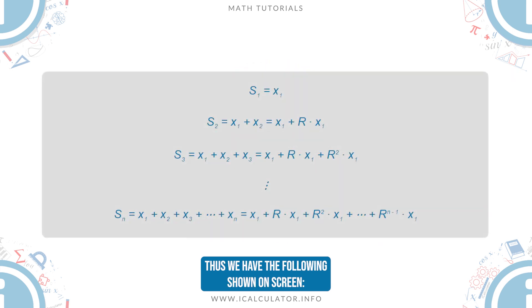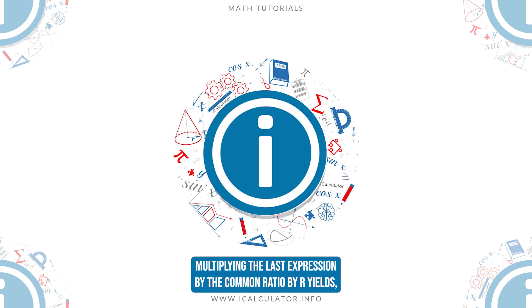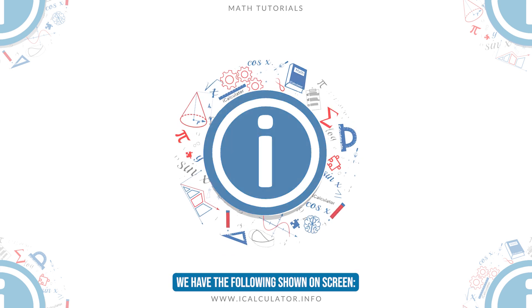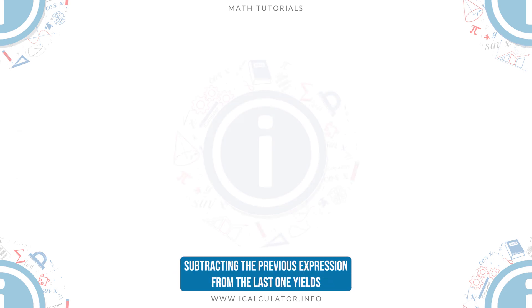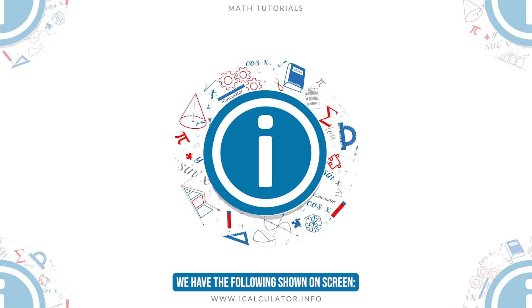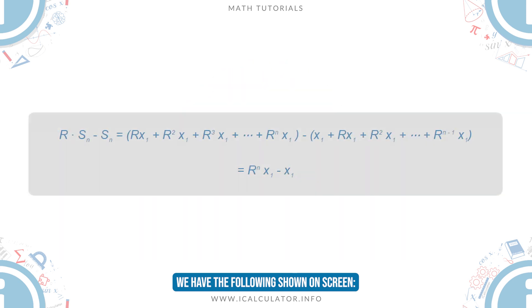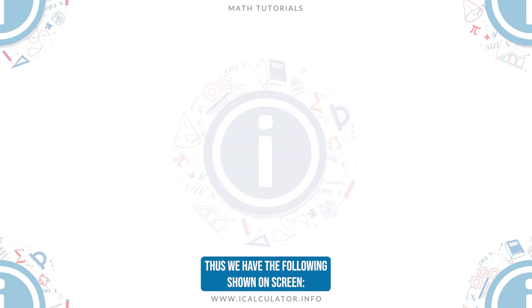We have the following shown on screen. Multiplying the last expression by the common ratio r yields the following shown on screen. Subtracting the previous expression from the last one yields the following shown on screen. Thus, we have the following shown on screen.